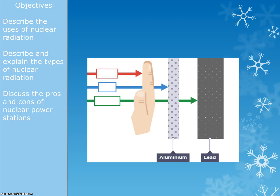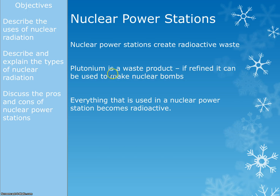You often get given diagrams with arrows representing different types of radiation, and you'll be asked to identify which is alpha, which is beta, and which is gamma. Just have a think for a second. They've been nice to you this time because they're all in the right order, so the first one will be alpha.